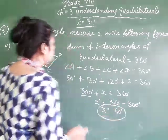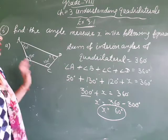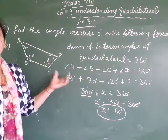So, what is the value of X? That is 60 degrees. So, in this way, we can find the missing angles in any polygon.